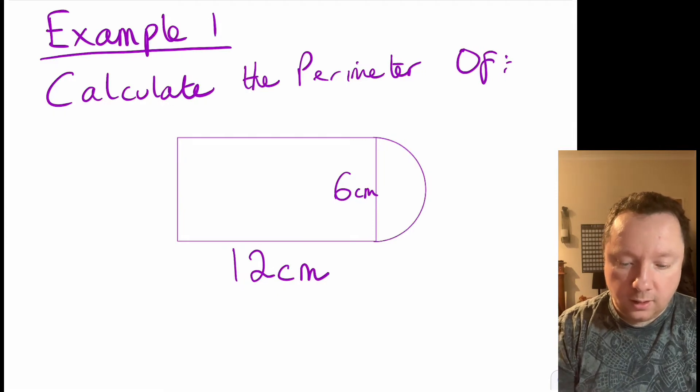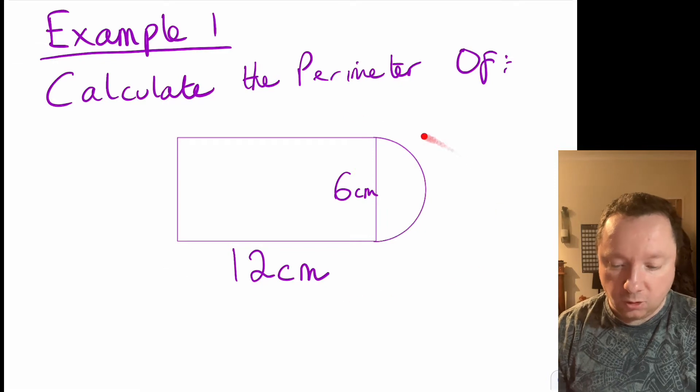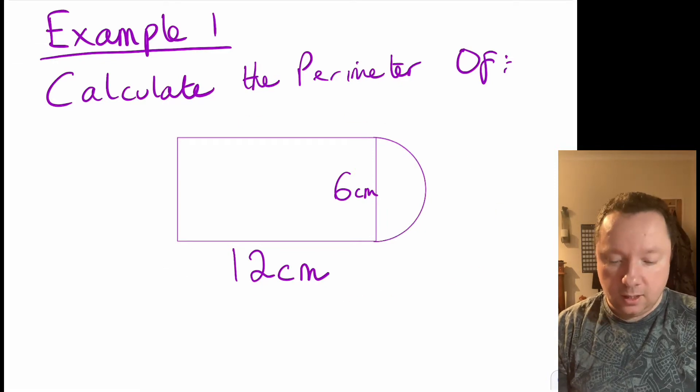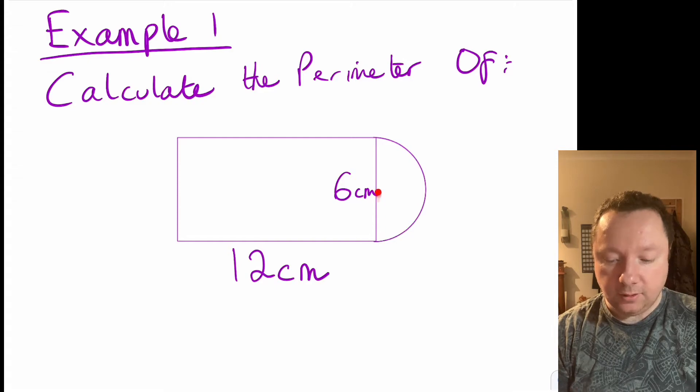So example one, it says calculate the perimeter of, and we've got this shape being drawn here with two sides knotted. This side here is 12 centimetres and then this side here is 6 centimetres.